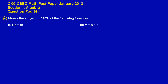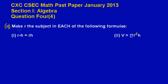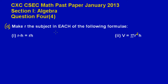In this video we are going to be looking at the solution to question 4 part A on the January 2013 CSEC math exam past paper. In part 1, they have it stated R minus H is equal to RH. The instruction states that we are to make R the subject in each of the following formulas. So basically R must be on one side and everything else on the other side of the equation.